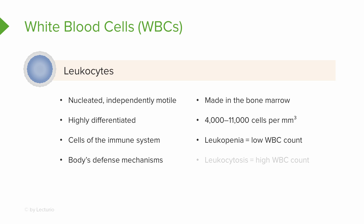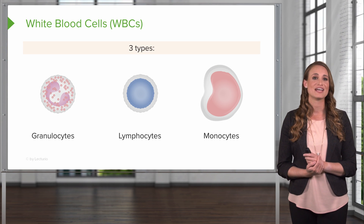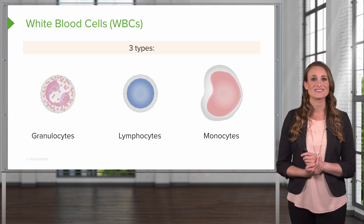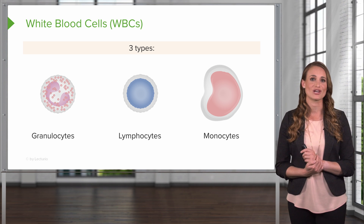Normal values range between 4,000 and 11,000. Leukopenia is the term we use to describe a low white blood cell count, and leukocytosis describes a high white blood cell count. There are three types: the granulocytes, the lymphocytes, and the monocytes. We'll touch on each.